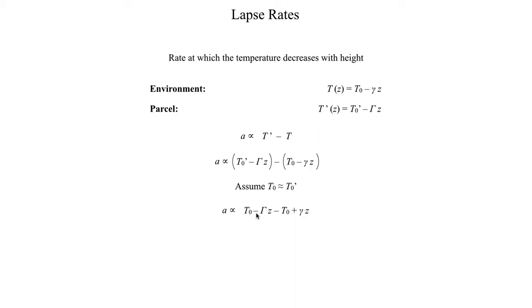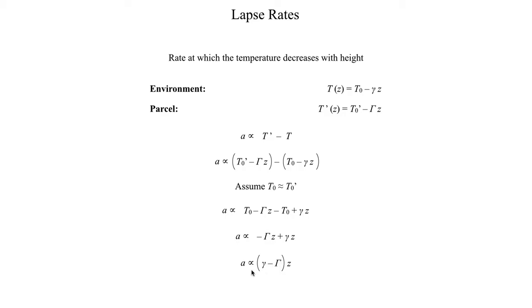If we make that assumption and apply some algebra, we get: T0 minus capital gamma times z, minus T0 plus lowercase gamma times z. The T0's cancel out, leaving us with minus the parcel lapse rate times height plus the environmental lapse rate times height. Rearranging, we get that the acceleration is proportional to the difference between the environmental lapse rate and the air parcel's lapse rate (γ − Γ). Physically, if the environmental lapse rate decreases much faster than the parcel's lapse rate, the upward accelerations are much more intense — giving you a positive buoyant force and an air parcel that wants to move upward.